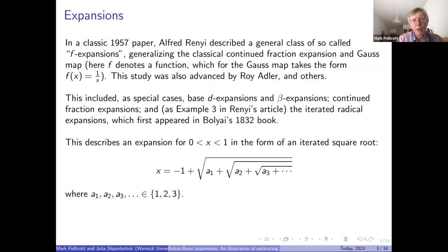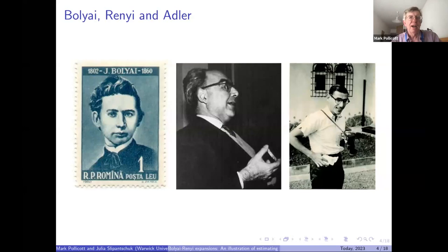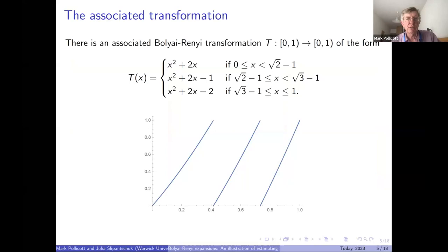The associated transformation of the interval corresponds to x goes to the square root of one plus x, minus one. Here is a picture of Bolyai from a stamp, a picture of Rényi — possibly eating a digestive biscuit or holding a cigarette — and a picture of Roy Adler, an American mathematician.